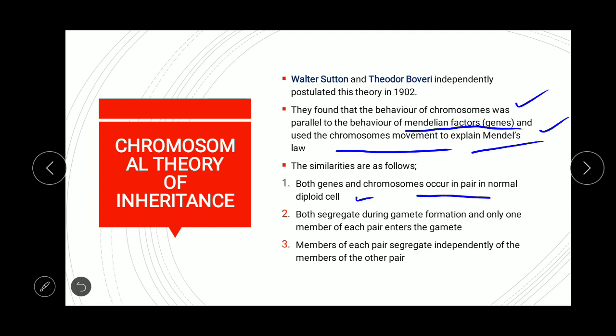Both genes and chromosomes occur in pairs in a normal diploid cell — one copy from the father and another from the mother. Both segregate during gamete formation, and only one member of each pair enters the gamete while the other member goes to another gamete.